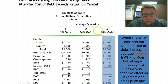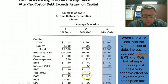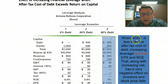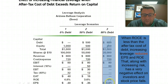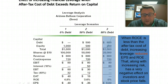Here are our leveraged scenarios. If we are significantly less profitable, being heavily levered significantly reduces our earnings per share and ROE, and that's going to likely cause our stock price to fall.